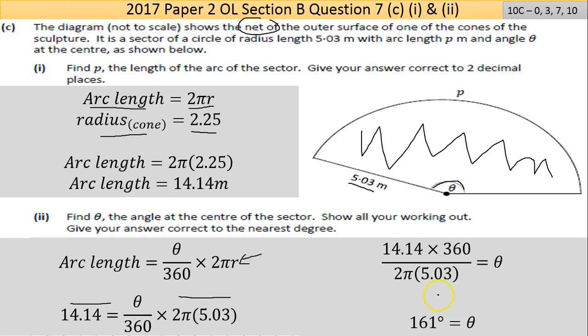If I rearrange all that to get theta on its own, I bring everything across to one side. The multiplication of 2π(5.03) on the right becomes division on the left. The 360 divided on the right becomes multiplied on the left. Put the whole calculation in the calculator and you get θ = 161°. That makes sense—it's less than 180°, so it passes the baloney meter.